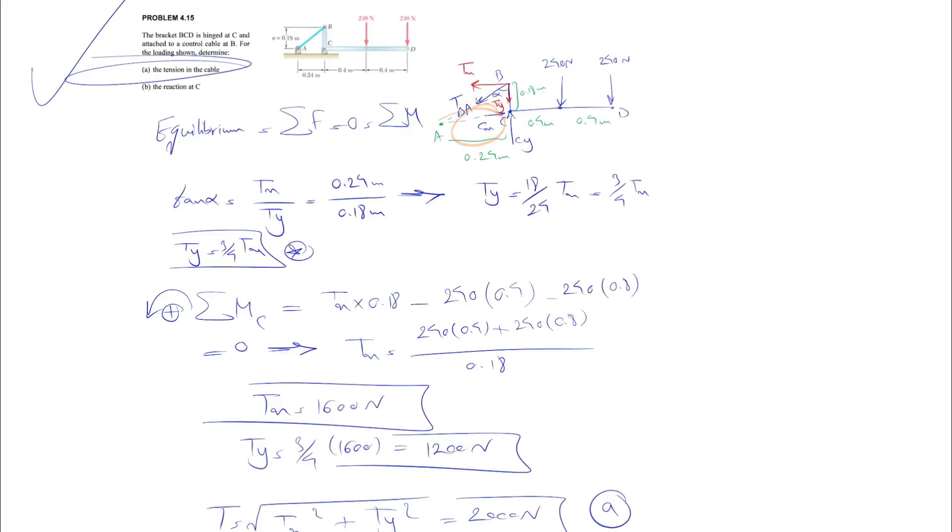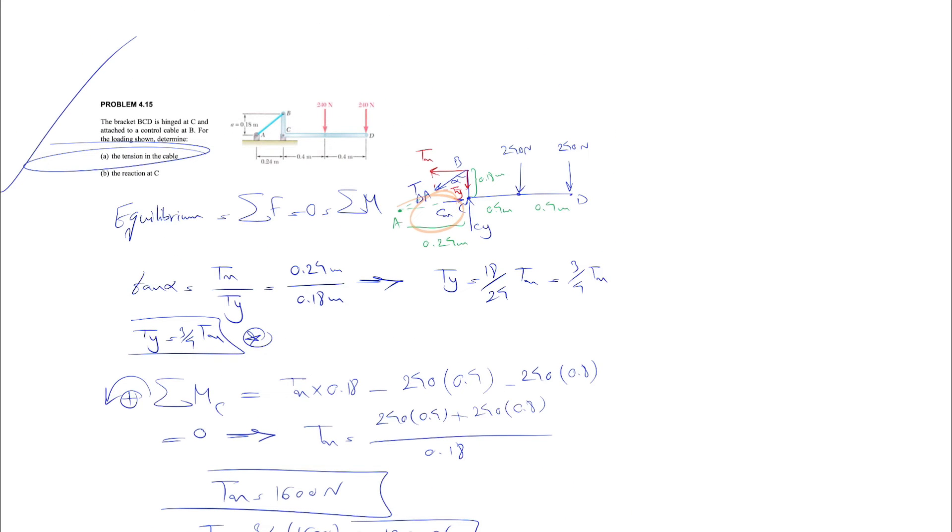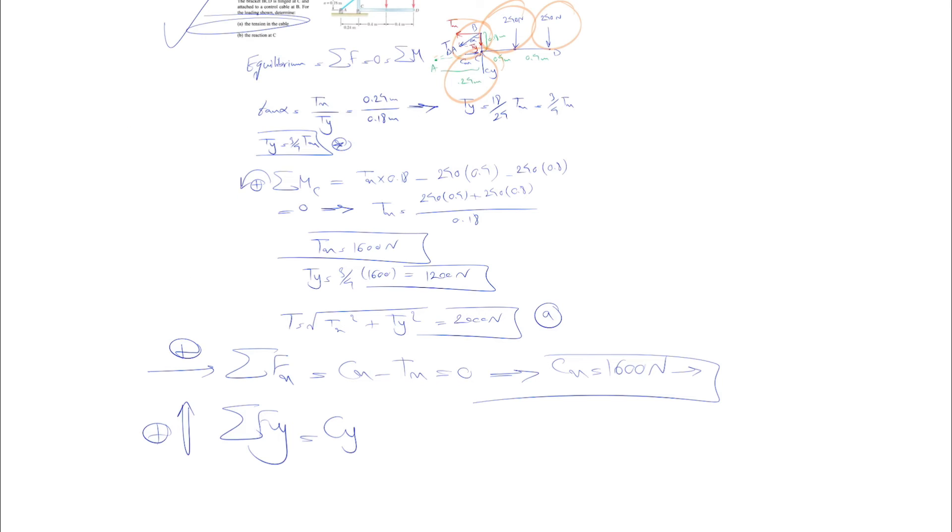Last equation that we have is the Fy equation. Again, upward positive. We'll see what we have in Y direction. We have the Cy which was upward, Ty which is downward, and we have 240 downward and 240 downward equals zero. From here we know that Ty is 1200, so Cy will be 1200 plus 240 plus 240, which will be 1680 newton, and it will be upward.